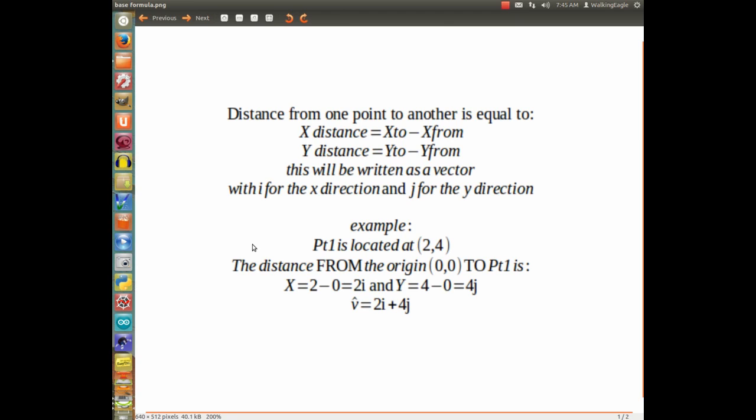Go back to our point one that we had on the graph, and it's located at the coordinates of 2 comma 4, 2 in the x direction, 4 in the y. The distance from the origin, which is at 0, 0, to point 1,